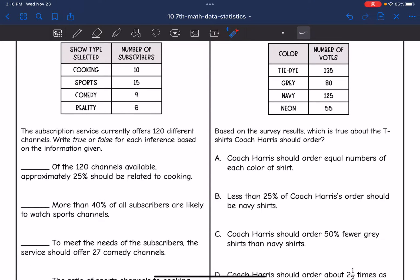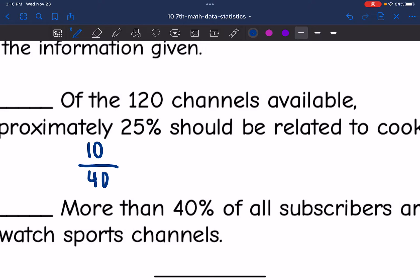The subscription service currently offers 120 channels. We're going to write true or false for each inference based on the information given. So remember there was a total of 40 surveys that were viewed. So let's determine if this one's true or false. It says of the 120 channels available, approximately 25% should be related to cooking. So we want to know what percentage out of 40 the 10 who watched cooking shows would be. So we're going to set up a percent proportion to see if it would be about 25%. So I'm going to do 10 over 40 equals x out of 100 and solve this to see if that matches the percent that they told us.